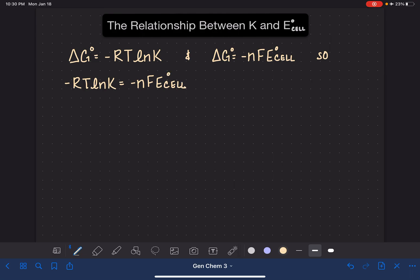And since what we're really looking for is a relationship between K and E cell, what we're going to do is just rearrange this equation right here to isolate the E cell variable. We're also going to get rid of these negative signs. Since both sides have a negative sign, they're not necessary anymore. So this equation is going to become E cell equals RT natural log of K over NF.